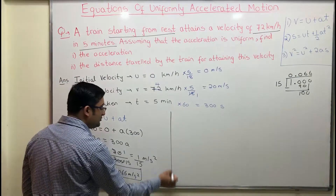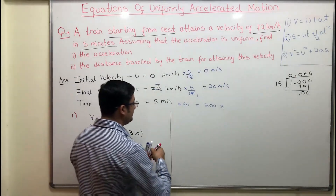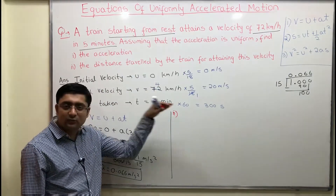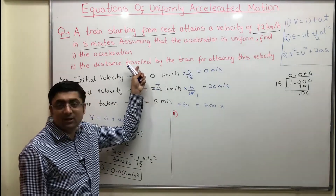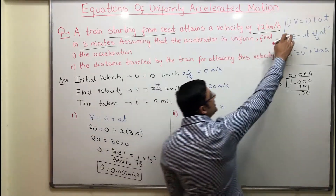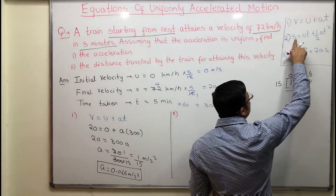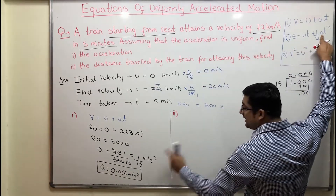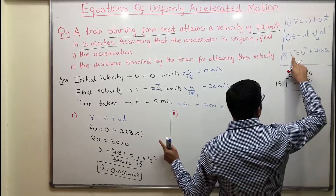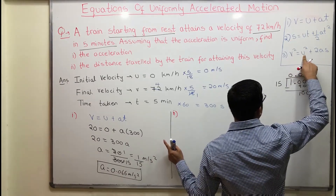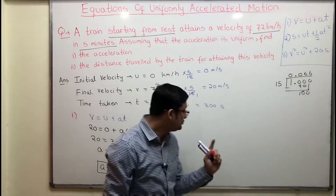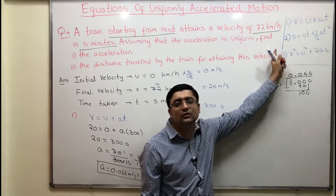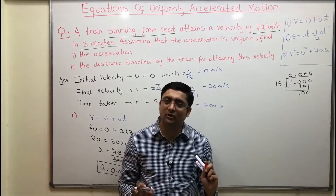Now let's do the second part — we want the distance traveled. Since there is one-direction motion, distance and displacement are the same, so we basically want s. The first equation does not have s. We have u, t, and a, so we can use equation 2. We also have v and u and a, so equation 3 works too. It's completely your choice.